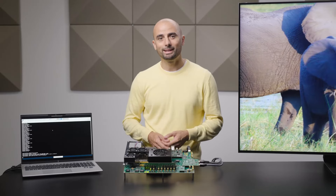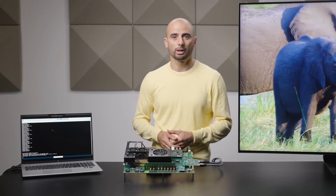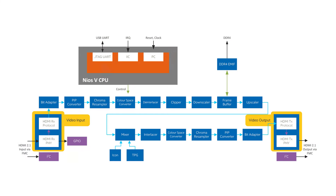In the video processing pipeline configured on the Agilex 7 I-Series SoC dev kit, the video stream is ingested via an off-the-shelf Intel HDMI 2.1 RX IP core which supports any resolution, frame rate, or color space up to 8K 60.